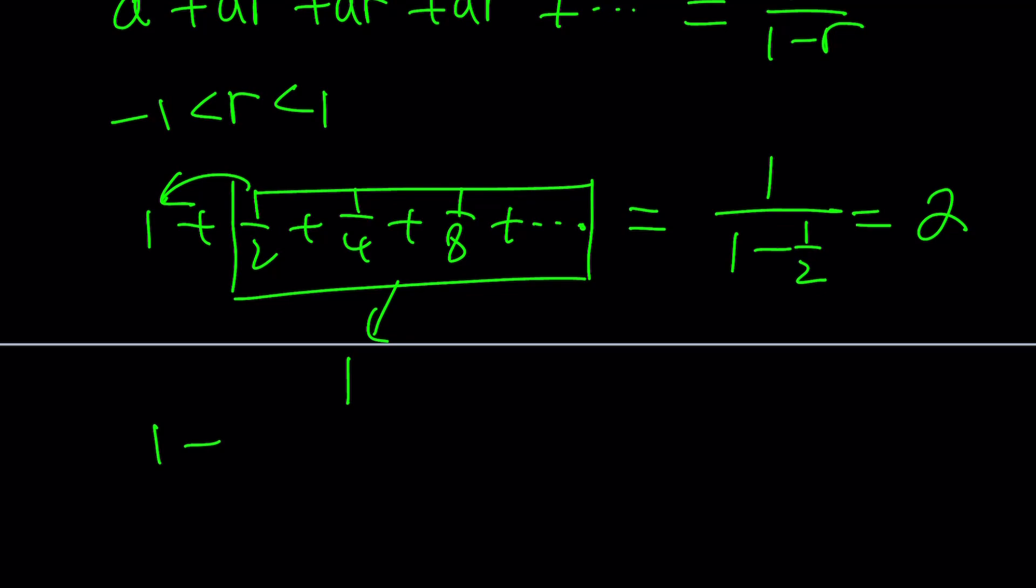So, our sum is different because it's not like 1 plus 1 over 5 plus 1 over 25 plus 1 over 125 because in this case, the numerator is always 1.